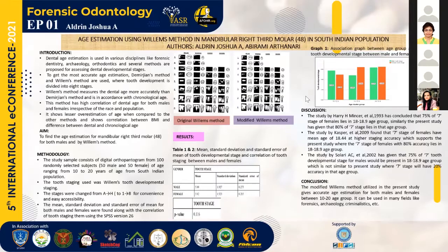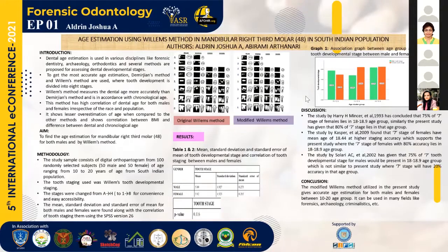Comparing with previous studies, Harriet-Minsert 1993 found that approximately 75% of females lie in the seventh stage — the open apexis stage of the root — in the 18 to 18.9 age group. Similarly, in my study it was 80%, showing strong correlation. Another study by Casper et al., 2009, found the same open apexis stage for females showed a mean age of 18.44 years, with high stage accuracy. Similarly, 80% tooth stage accuracy was found for females in the 18 to 18.9 age group in my study.